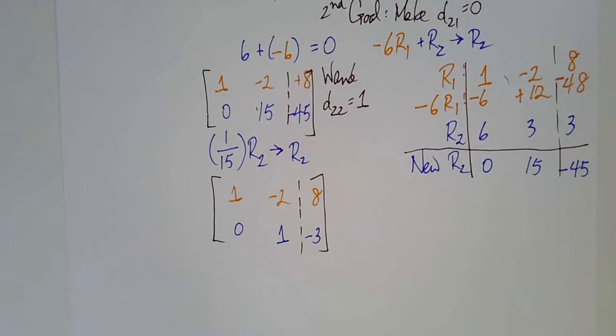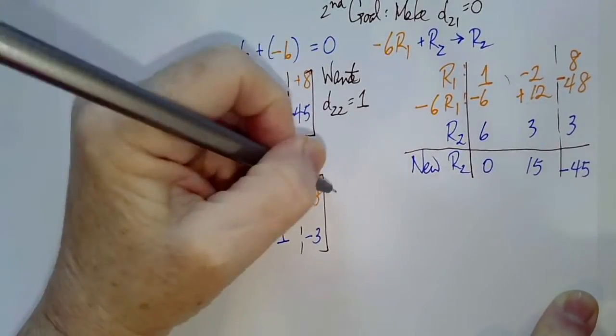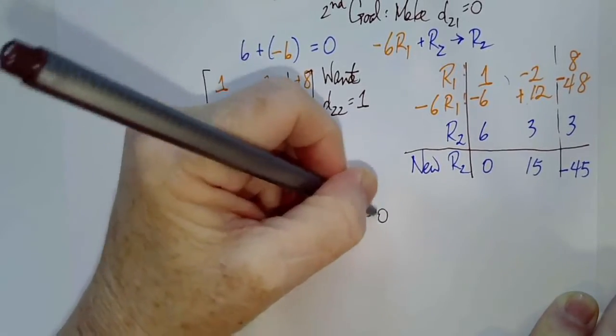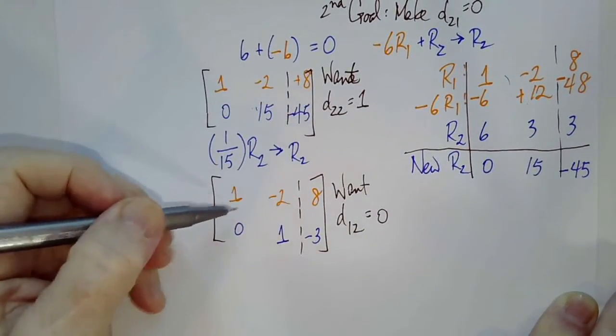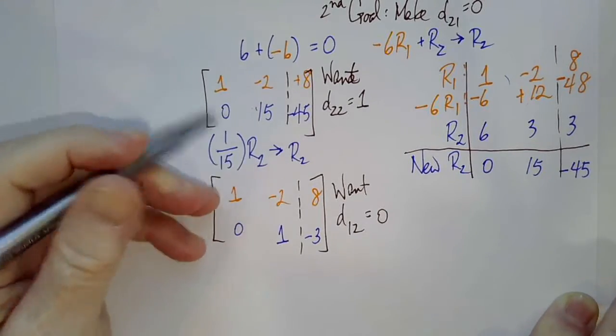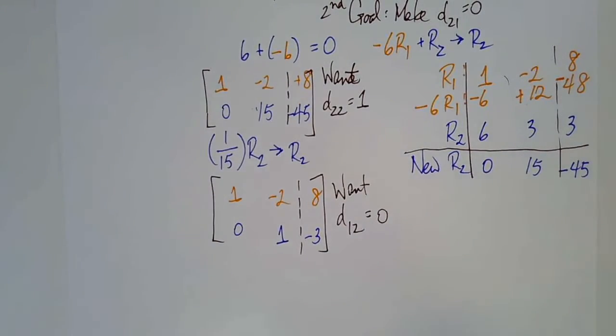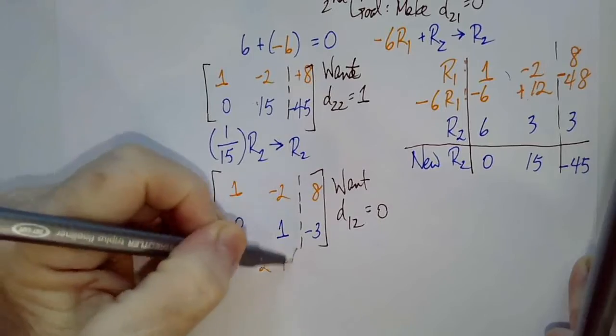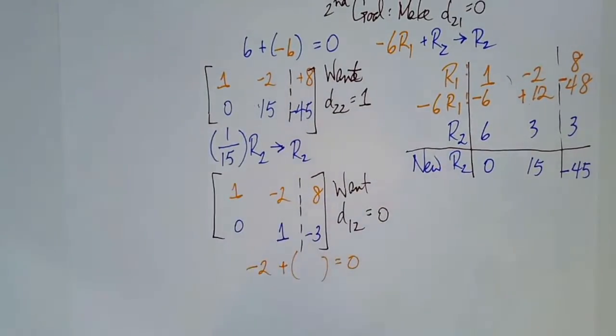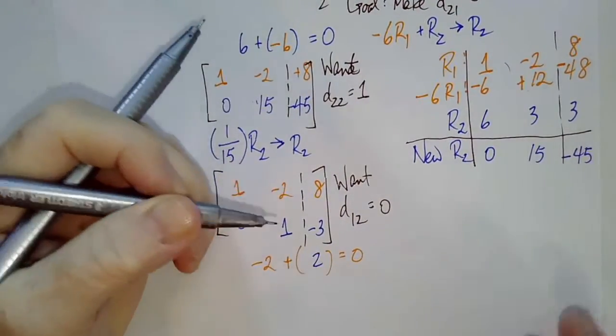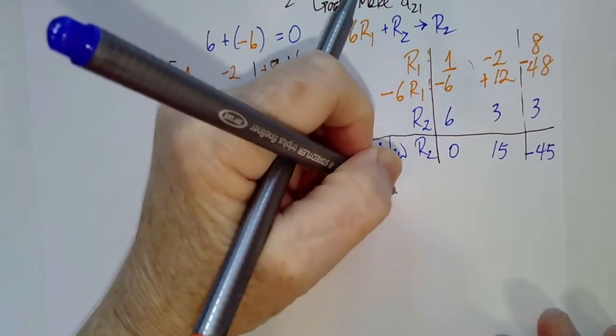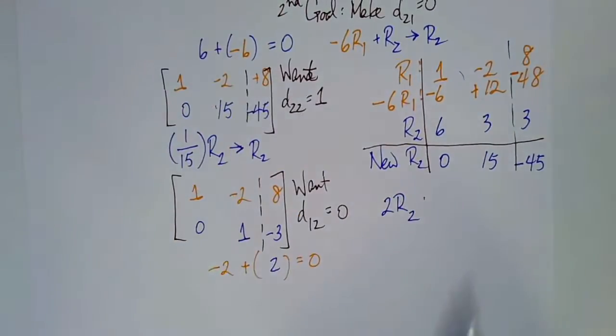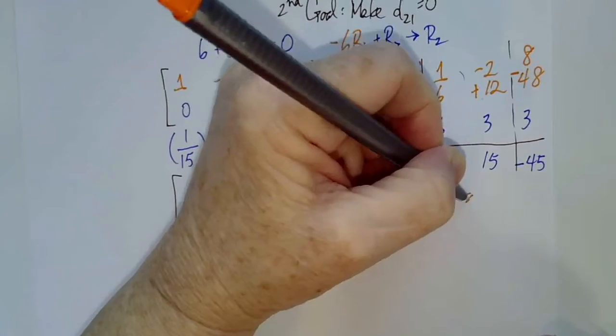The last thing that we need, we want d12 to be 0. That's the element in the first row but the second column. Well, right now d12 is negative 2. Since negative 2 plus 2 is 0, we're going to multiply row 2 by 2, add it to row 1 to get the new row 1.